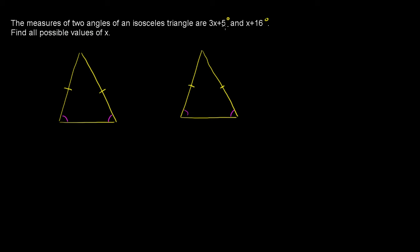So what could the 3x plus 5 degrees and the x plus 16 degrees be measures of? Well, maybe this one right over here has a measure of 3x plus 5 degrees, and the vertex is the other one — so maybe this one up here is the x plus 16 degrees. The other possibility is that this is describing both base angles, in which case they would be equal. So maybe this one is 3x plus 5 and this one over here is x plus 16.